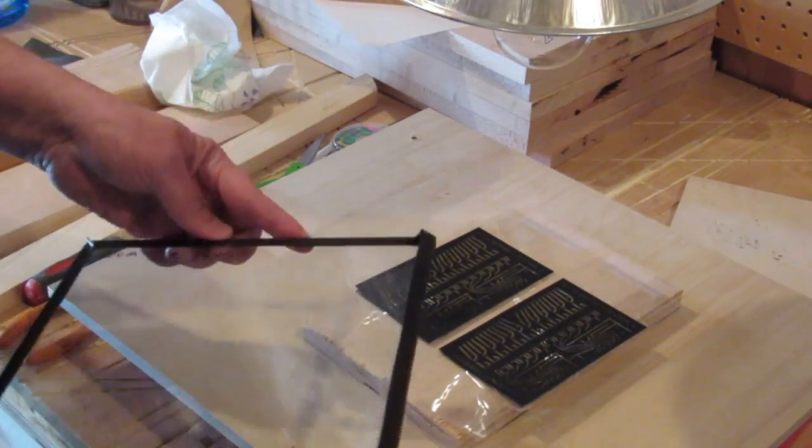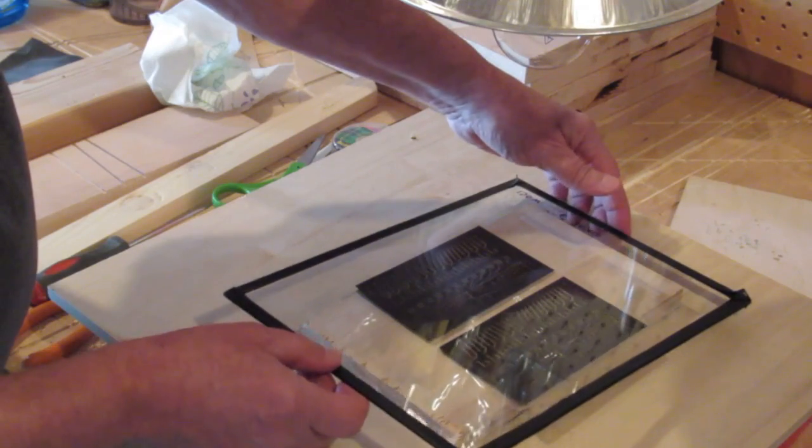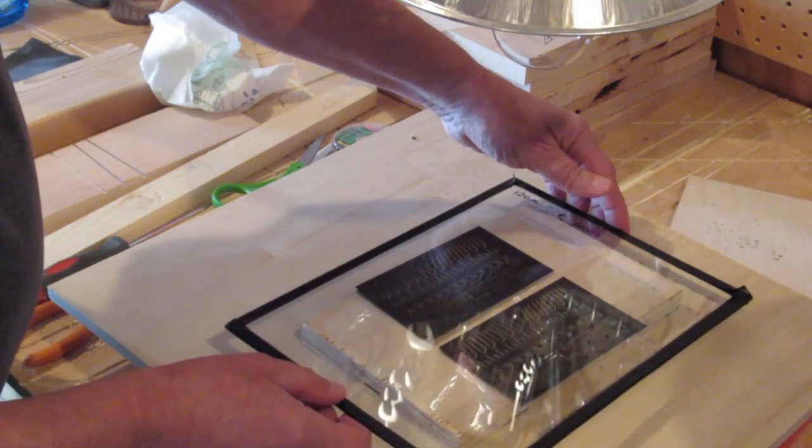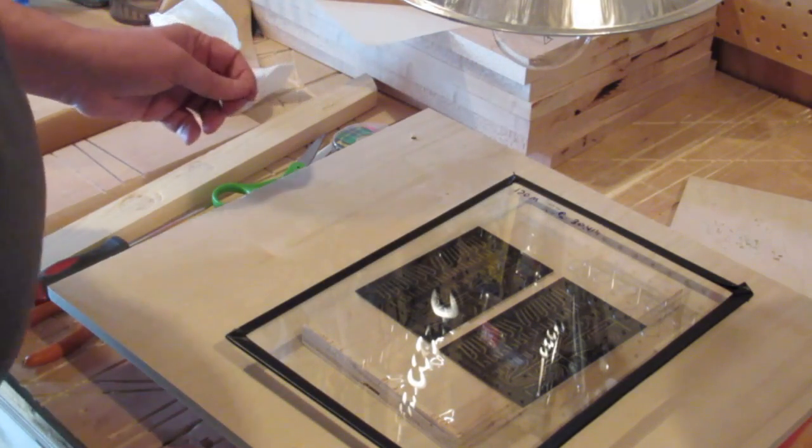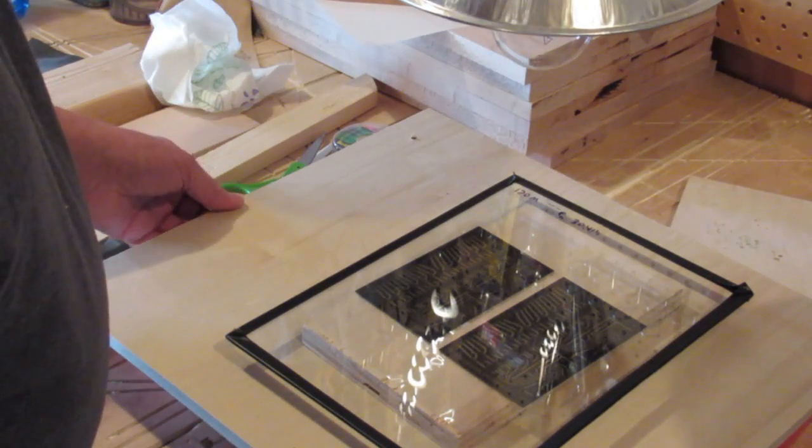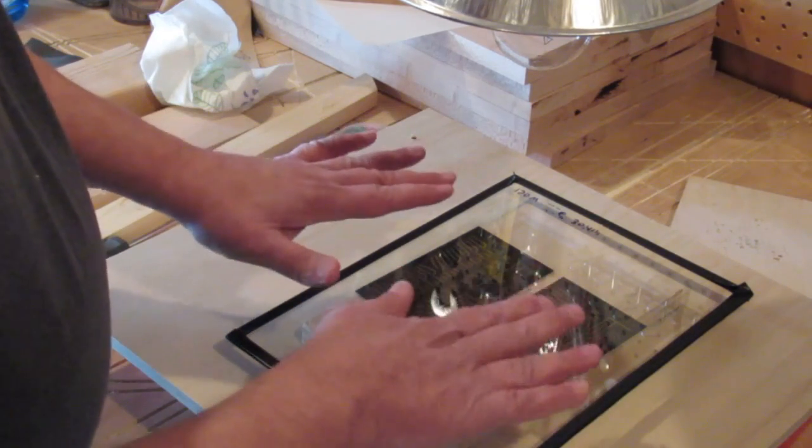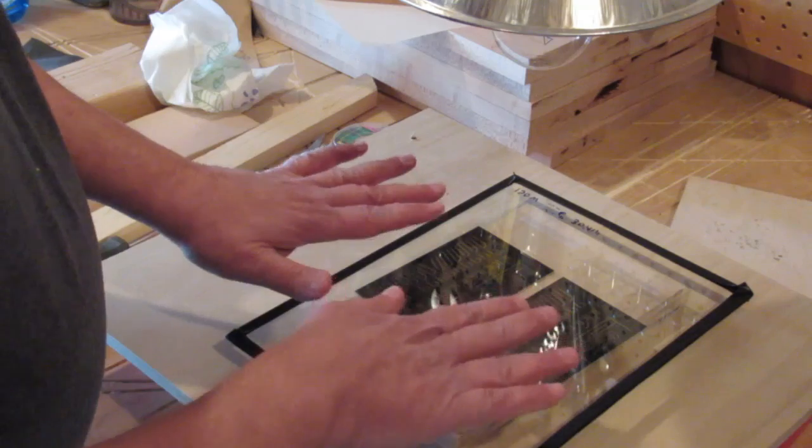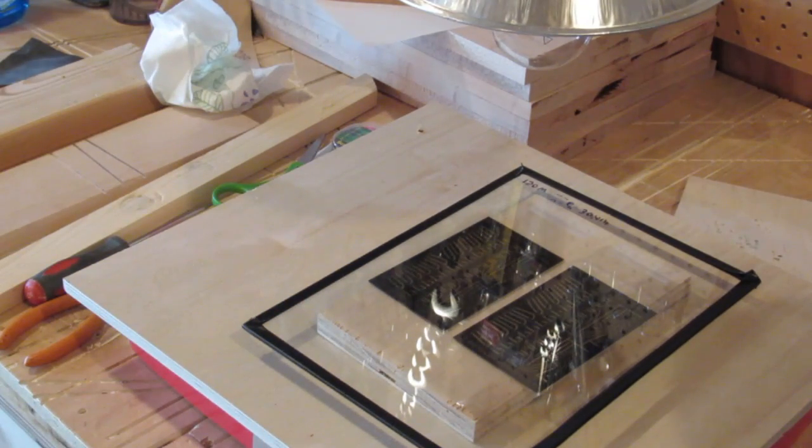Then we'll hold the negatives down next to the printed circuit boards with a piece of glass. You want to clean the glass as well as you can before you lay it down on the printed circuit boards. And that will lay the negatives down as flat as possible. And we'll turn the light on.